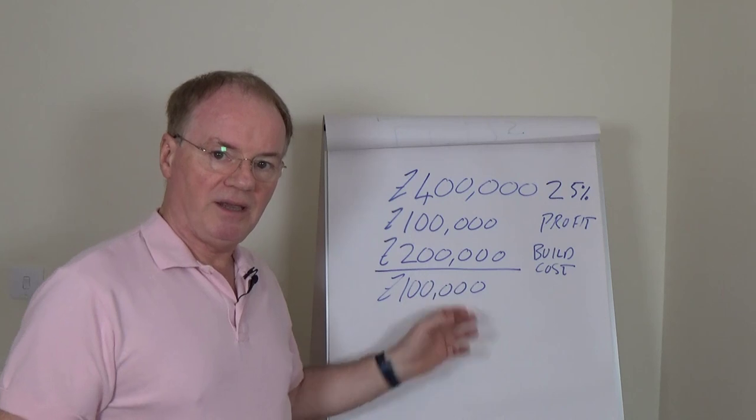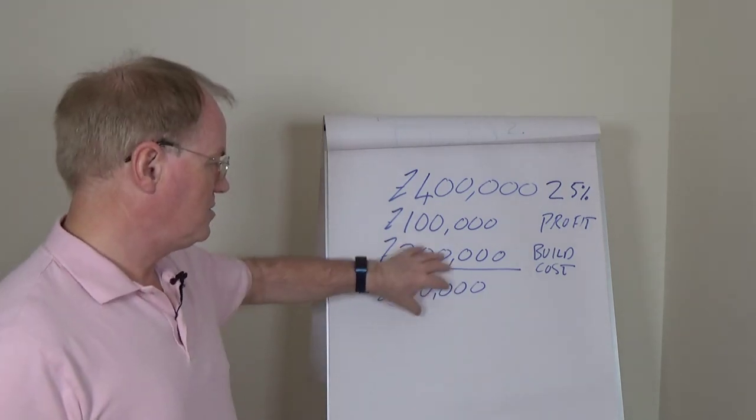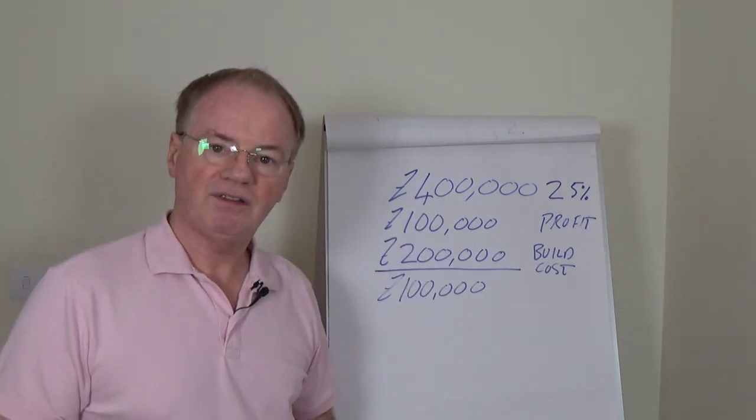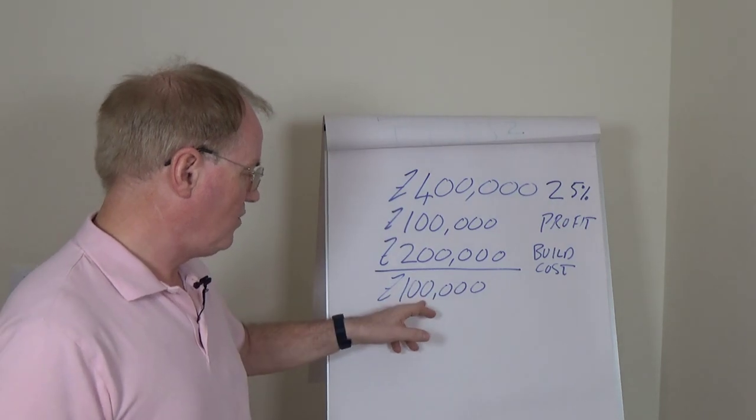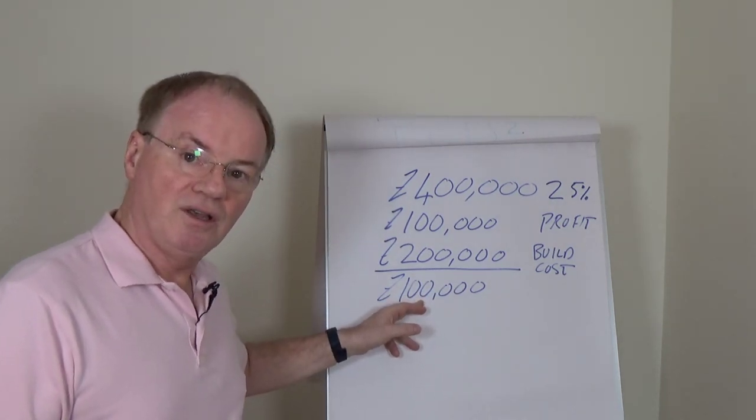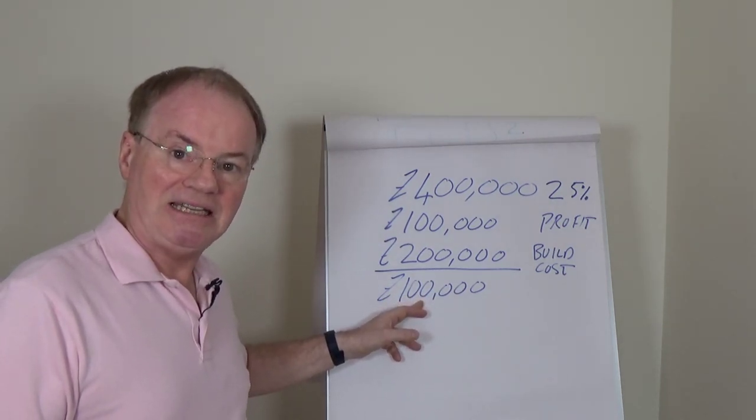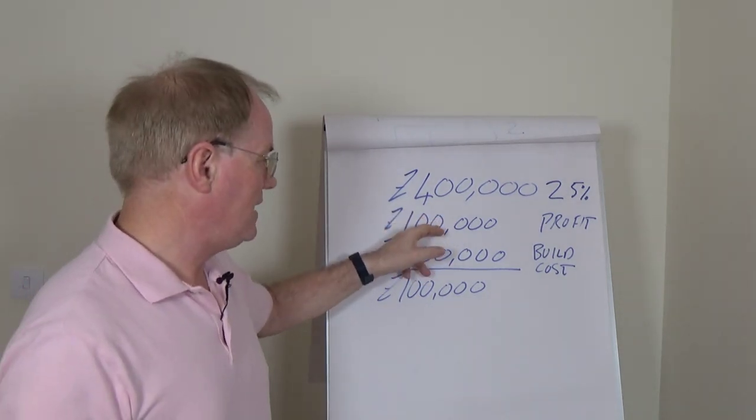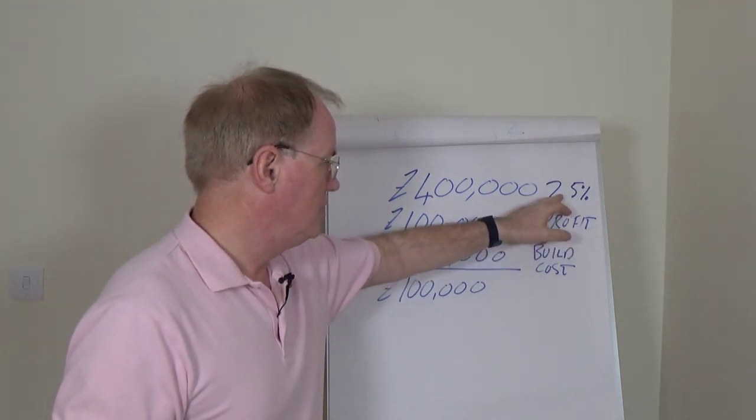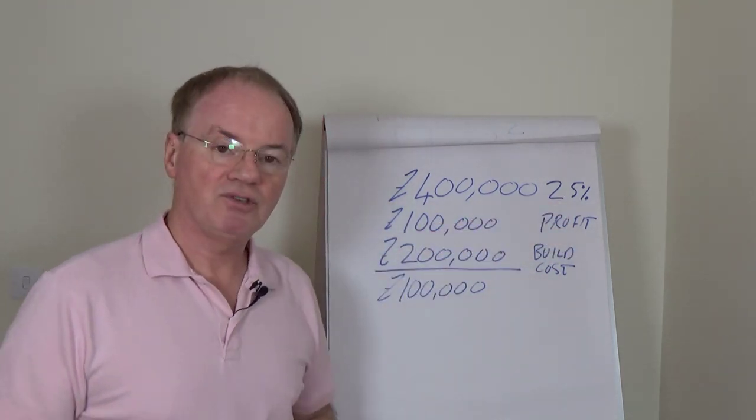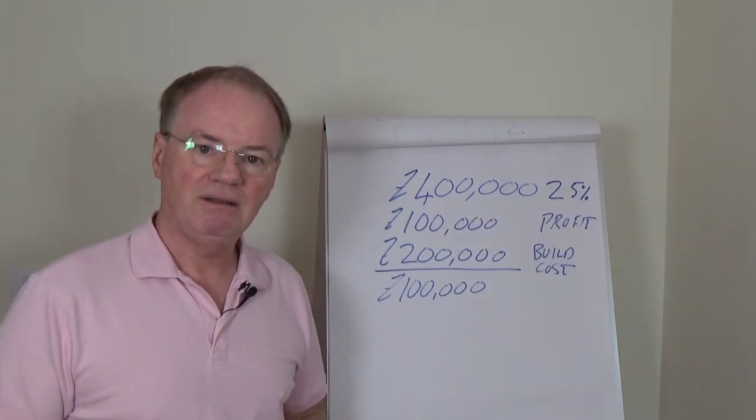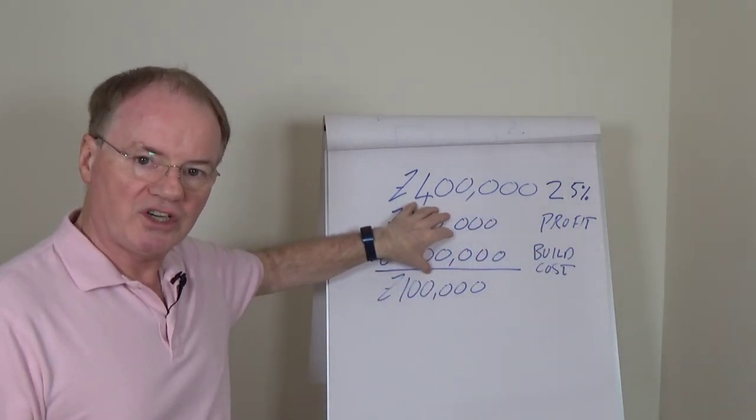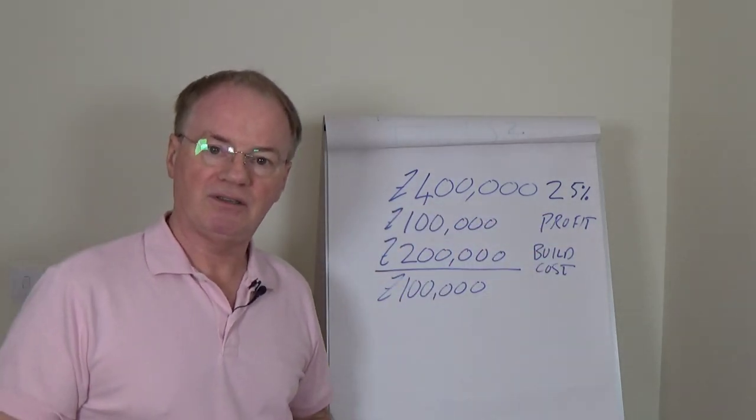So assuming that build cost covers absolutely everything, then you simply have the residual land price which is going to be worth $100,000. Now a surveyor may come along and say that this piece of land is worth $150,000. Well if it's worth $150,000 there's only one place that can eat into and that's your profit. And therefore that drops to being not 25% but 12.5%, and that would be too risky for a developer to undertake.